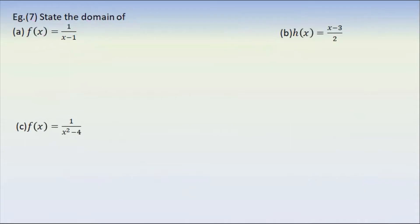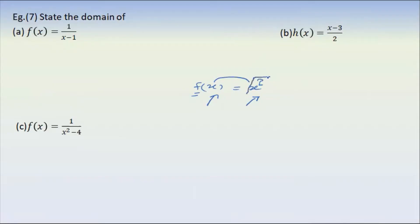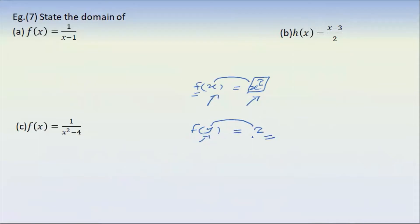The function is f(x) equal to x squared. We look at the domain elements, so that means the elements. If we have the domain elements, we can map them. This is the y-element of the co-domain.